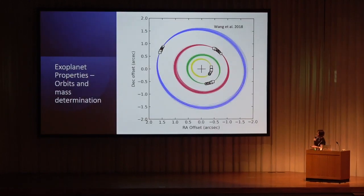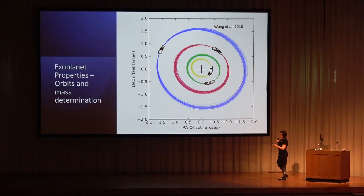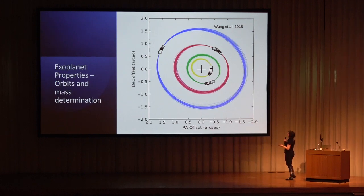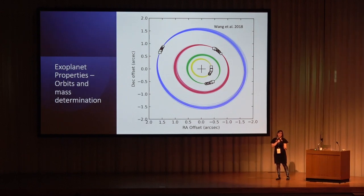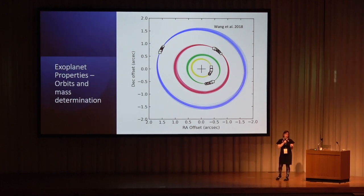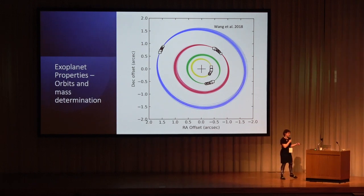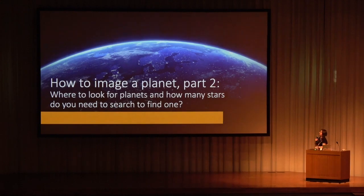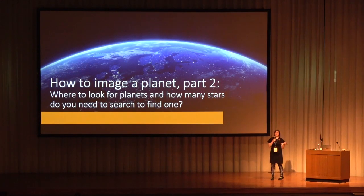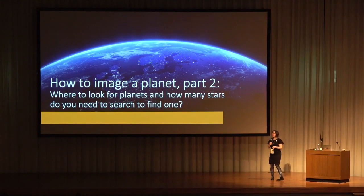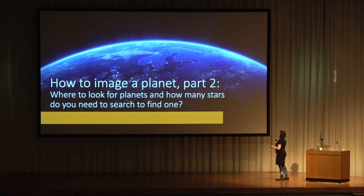Another important property from directly imaged exoplanets — though sometimes you have to wait a while — is orbital information. By following planets over long enough timescales and combining with techniques like radial velocity or Gaia/Hipparcos astrometry, you can fit orbits and get dynamical masses. These masses are really valuable to fully benchmark the models. This raises an important question: how did we find these planets, how many stars were surveyed, and where did we look?